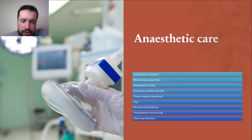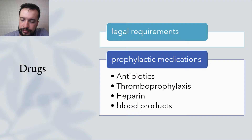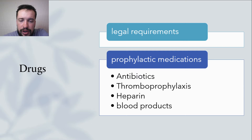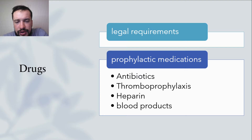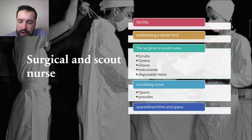Each operation center will have an anesthetic machine with appropriate monitoring equipment and an anesthetic trolley with drugs and other equipment. Typically, expiratory carbon dioxide, tissue oxygen saturation, ECG and neurological observations are monitored. Drugs of addiction need to be managed to meet legal requirements and are securely stored outside the actual operation center. Another key role of the anesthetist intraoperatively is the administration of prophylactic medications such as antibiotics and thromboprophylaxis, as well as therapeutic agents such as heparin or blood products for cardiac and vascular surgeries.